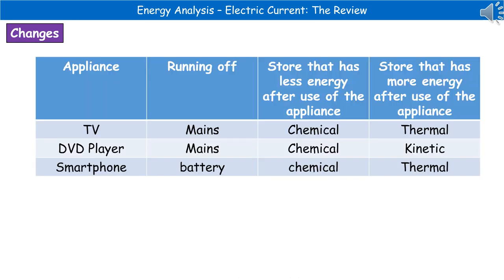Our appliances are going to be transferring energy between different stores. I've got three examples here. A TV runs off mains electricity — the chemical store decreases and the thermal store gains energy. A DVD player also runs off the mains — starting with chemical energy, it ends up with more energy in the kinetic store. And a smartphone uses a battery, which is a chemical store that runs lower after use, with energy transferred into the thermal store.